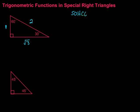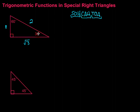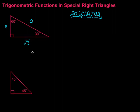SOHCAHTOA — the first piece is sine equals opposite over hypotenuse, cosine equals adjacent over hypotenuse, and tangent equals opposite over adjacent. It's important to know what opposite, adjacent, and hypotenuse mean. If we're sitting at the 30-degree angle, the hypotenuse is always the side across from the right angle — in this case, 2. The opposite is the side the angle opens up to, and the adjacent is the remaining side, which is the square root of 3.